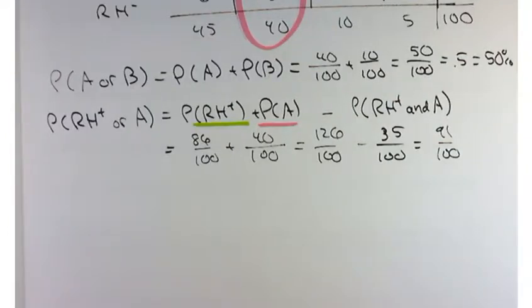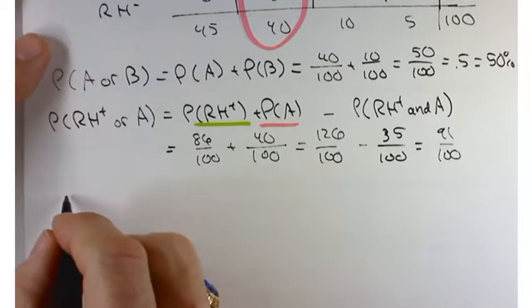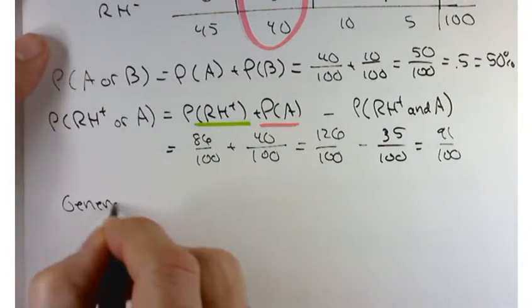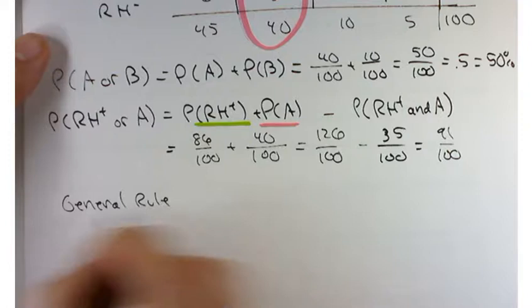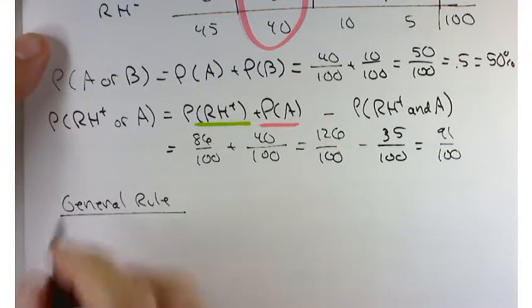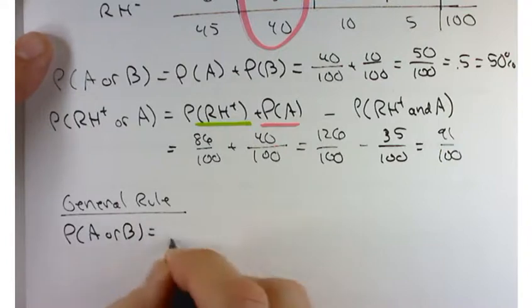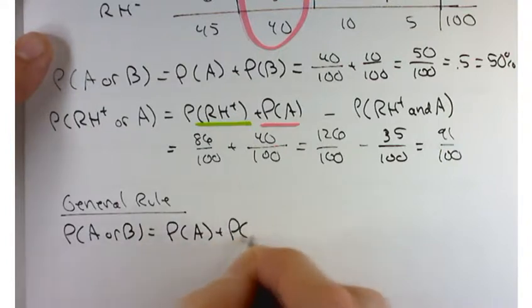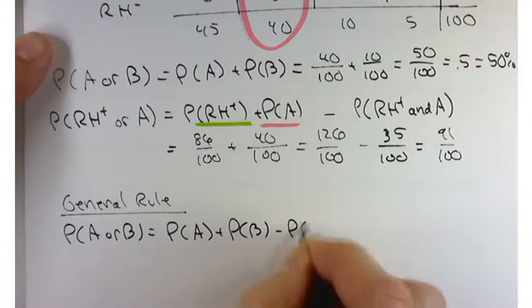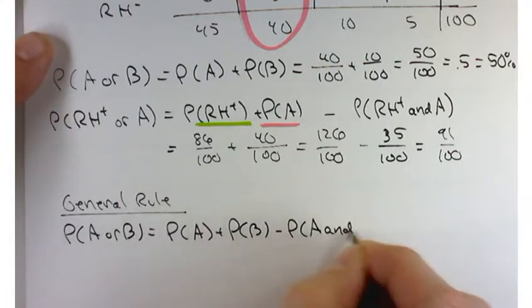So this leads us to a nice general rule for working with probability of A or B. I'll have two different rules, but the general rule is this. Probability of A or B is a probability of A plus a probability of B minus a probability of their intersection.